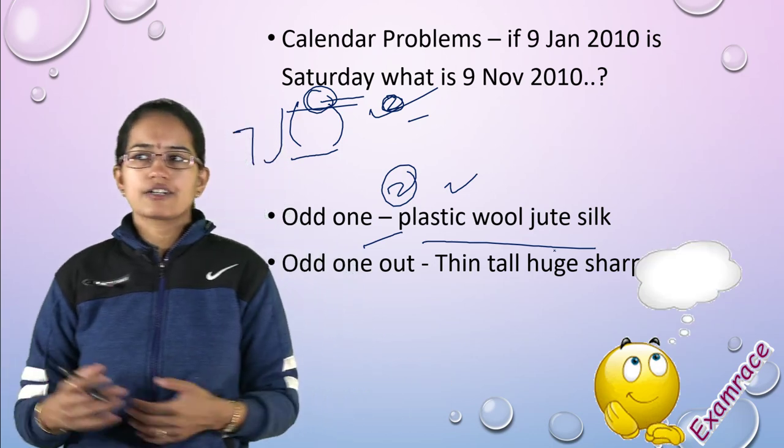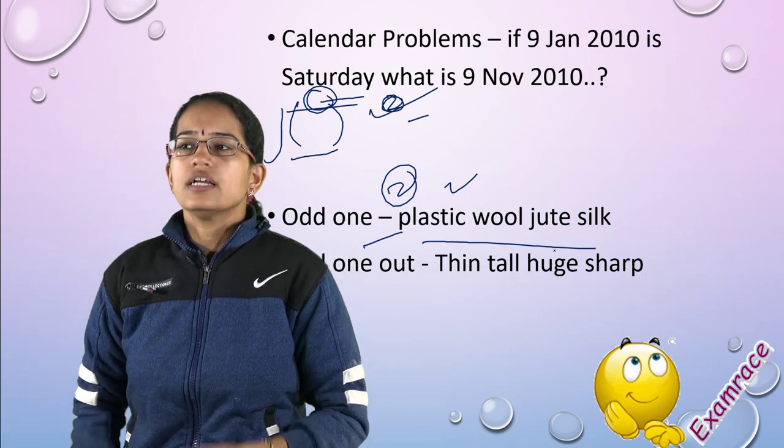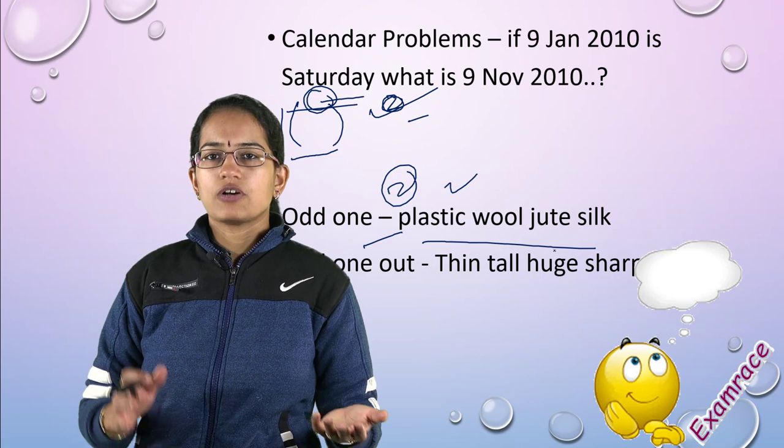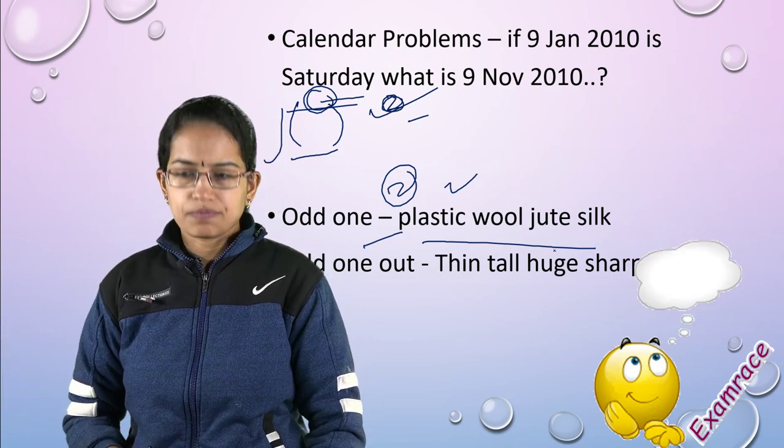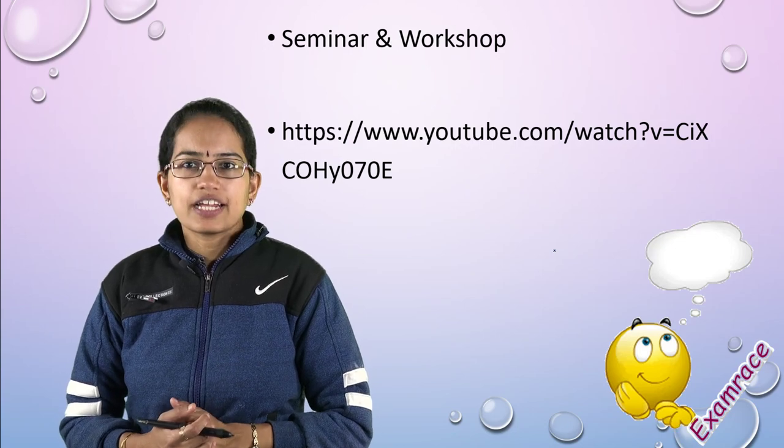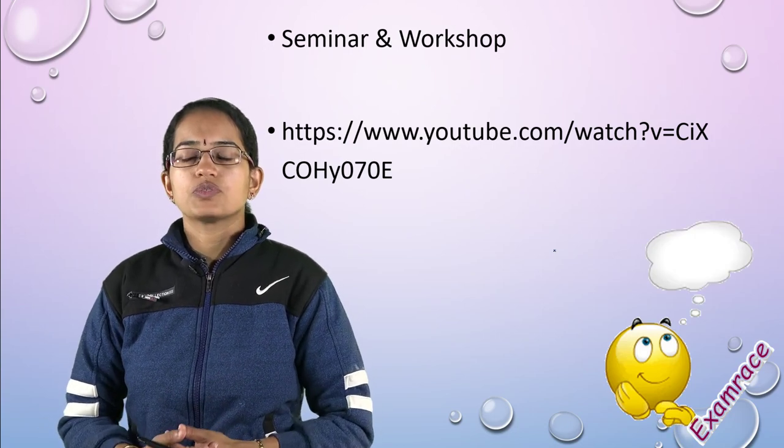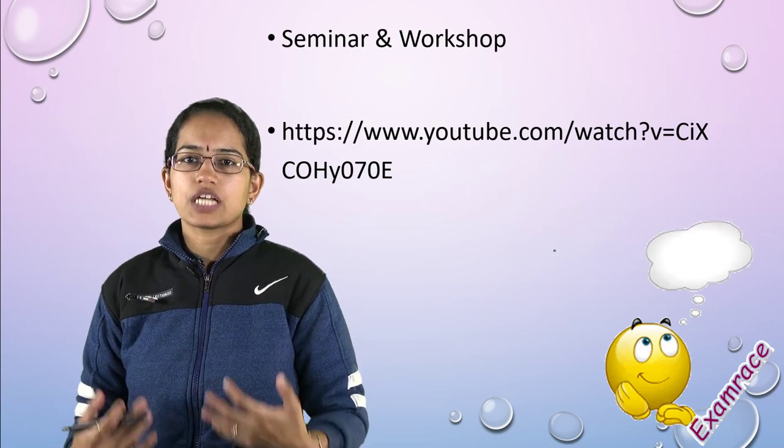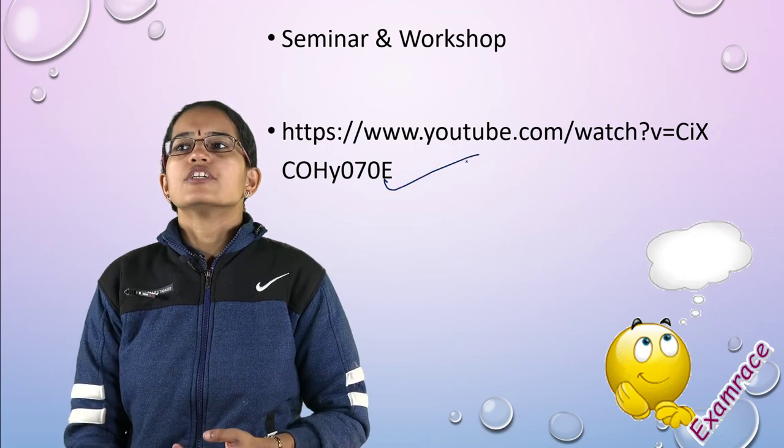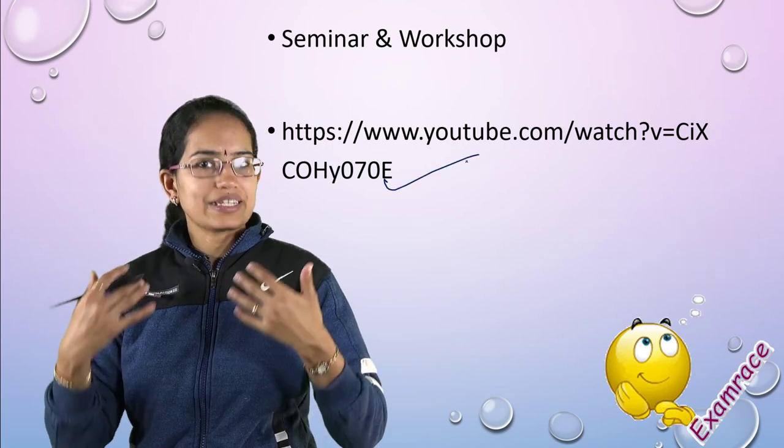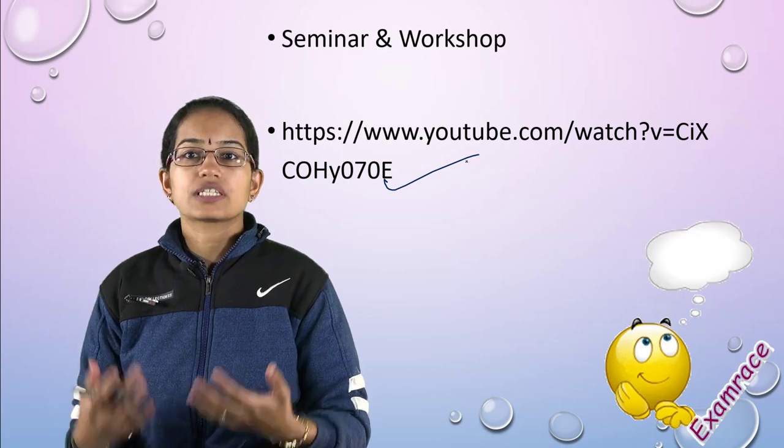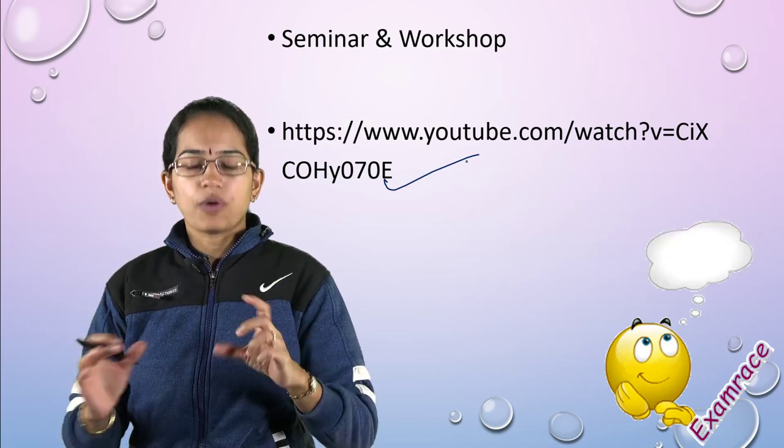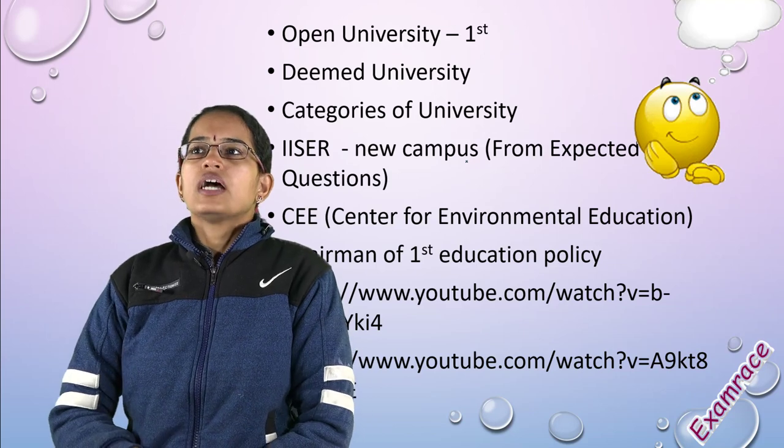Odd one out is very simple - you have four choices. Each set had different combinations. Here, plastic is the odd one out because all the rest are obtained from nature; plastic is man-made. On seminar and workshop, I'm happy to have comments from students that exactly the same thing was asked that we discussed in this lecture.